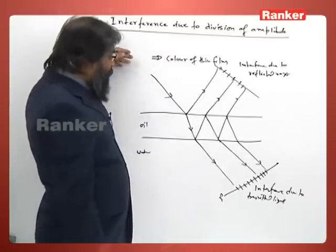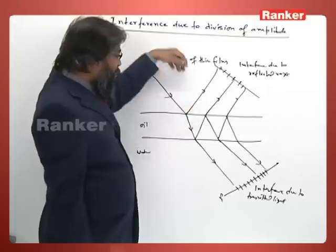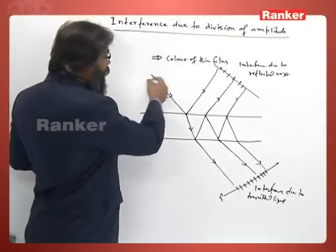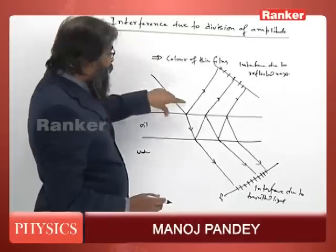This ray may be incident obliquely or normally. Generally we prefer normal incidents. This may be a point source or this may be an extended source, that is it may be a plane wave front.